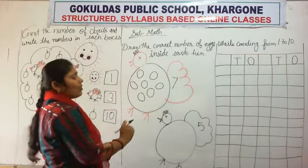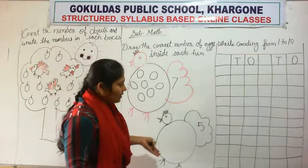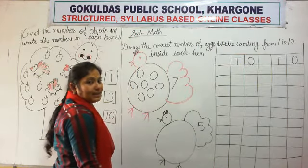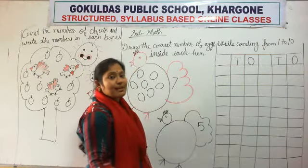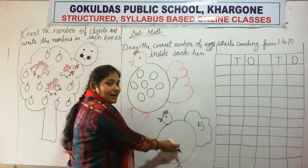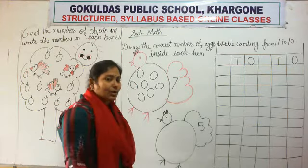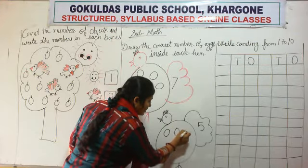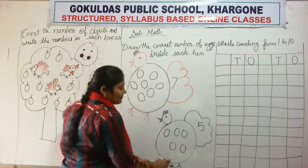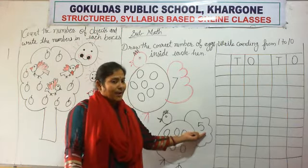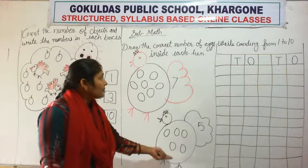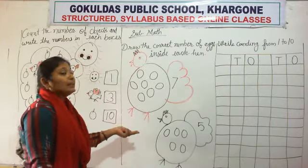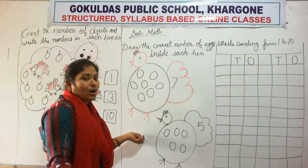Now next — we draw how many eggs here? 5 eggs. Let's do it: 1, 2, 3, 4, 5. Yes, here is number 5, so draw 5 eggs inside your hand. This type of work also goes in your math notebook.